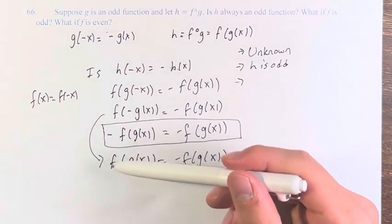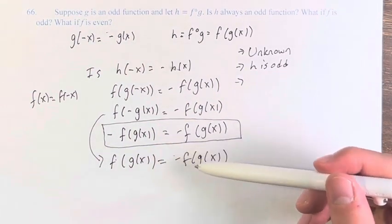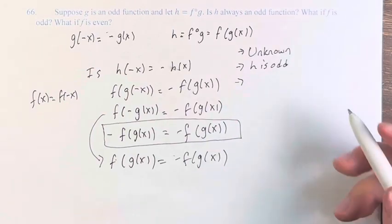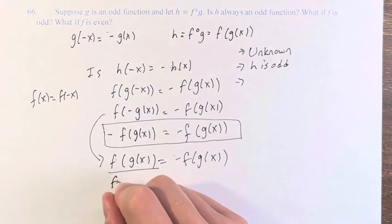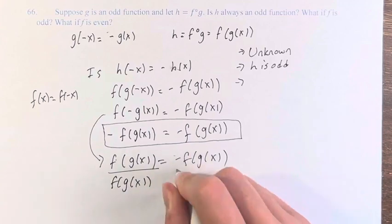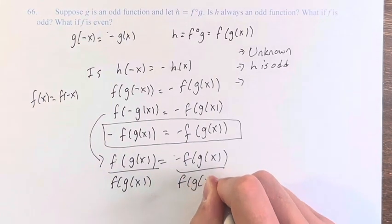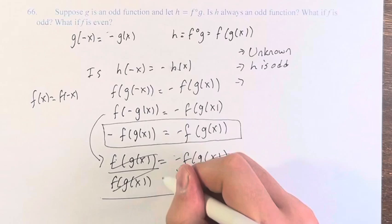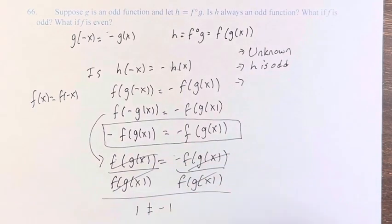And here, we can see that f of g of x is not equal to negative f of g of x. Because if we were to divide by the function itself, this is 1, and it is not equal to negative 1.